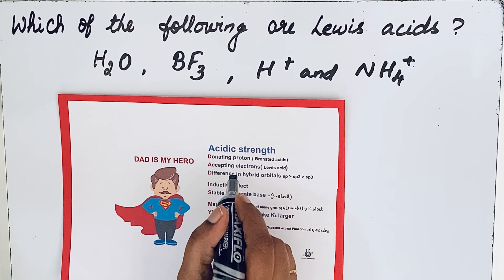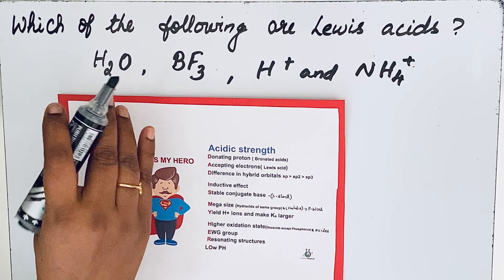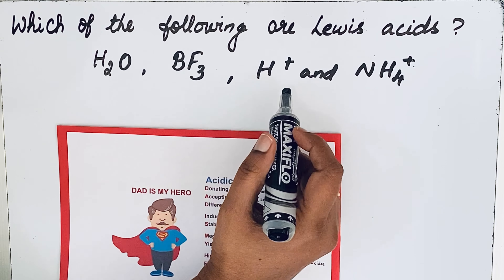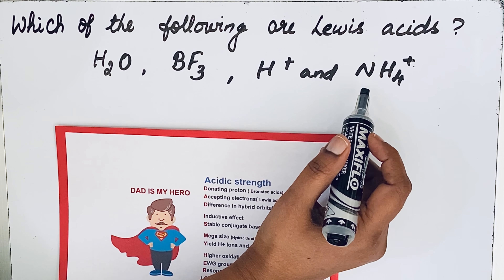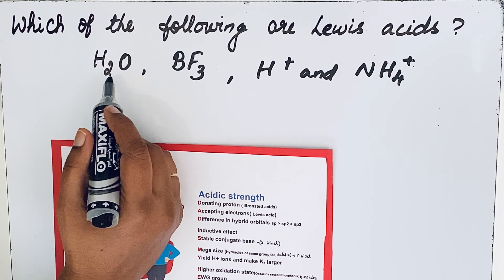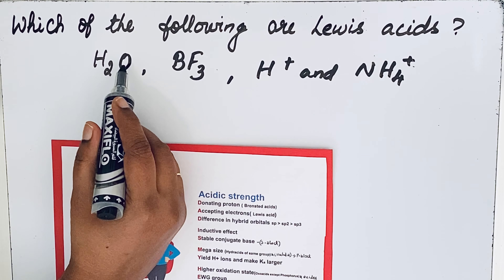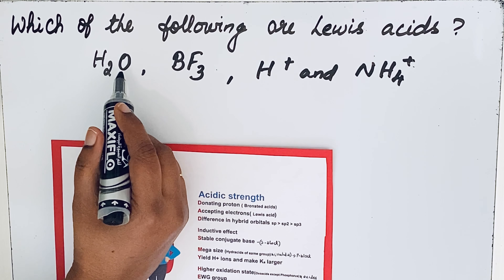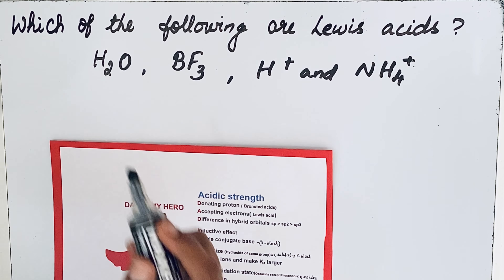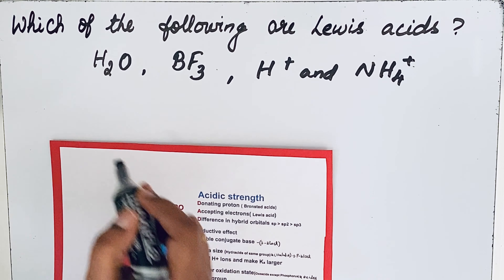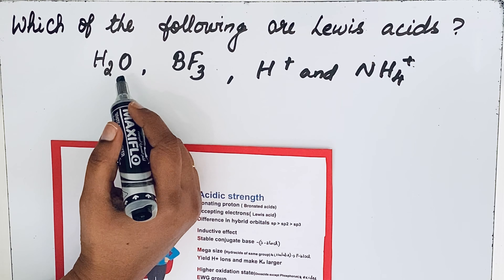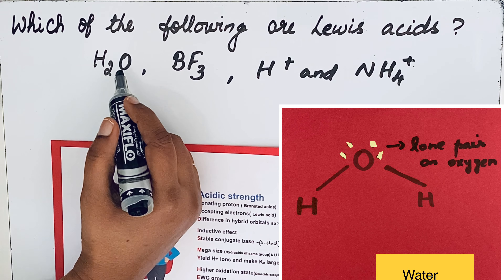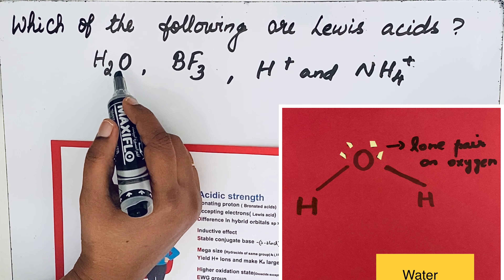For a Lewis acid, it must accept electrons. Looking at H₂O: oxygen is the central atom, which carries a lone pair of electrons. Since it has extra electrons rather than accepting them, H₂O is not a Lewis acid — it is a Lewis base.